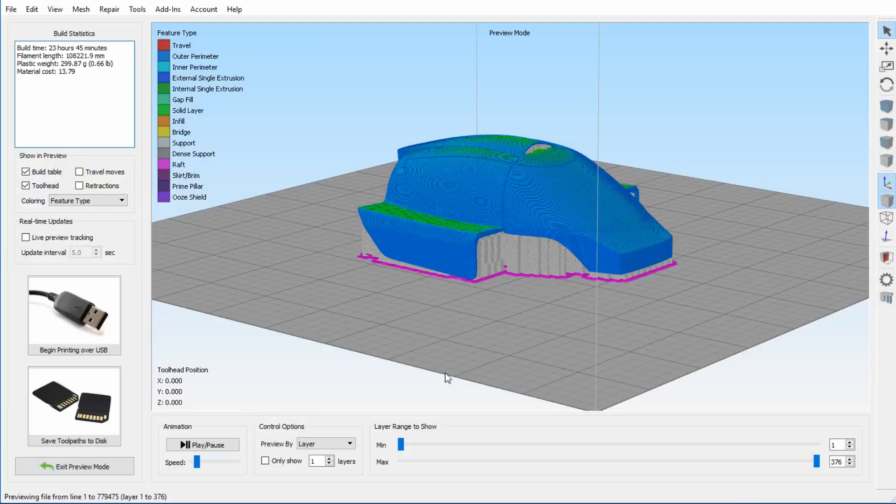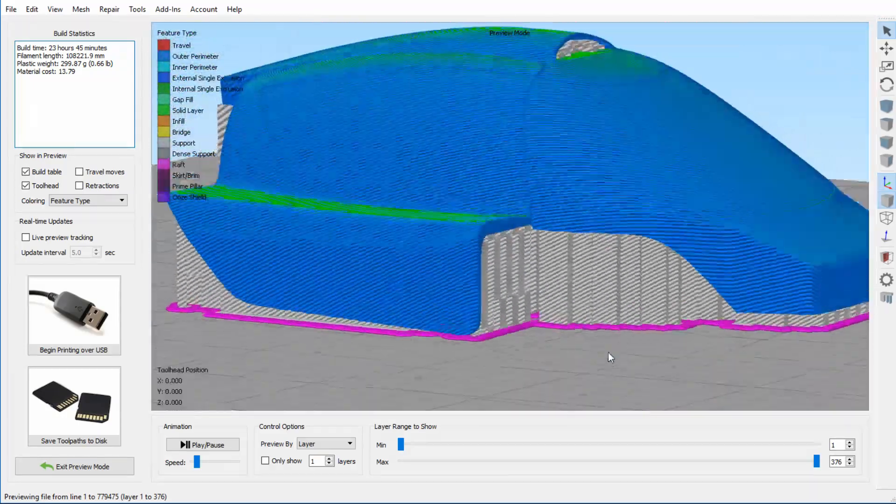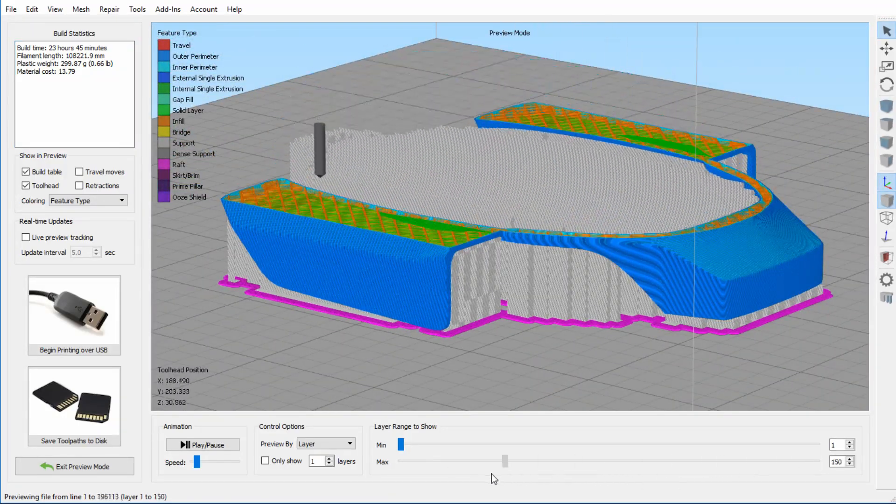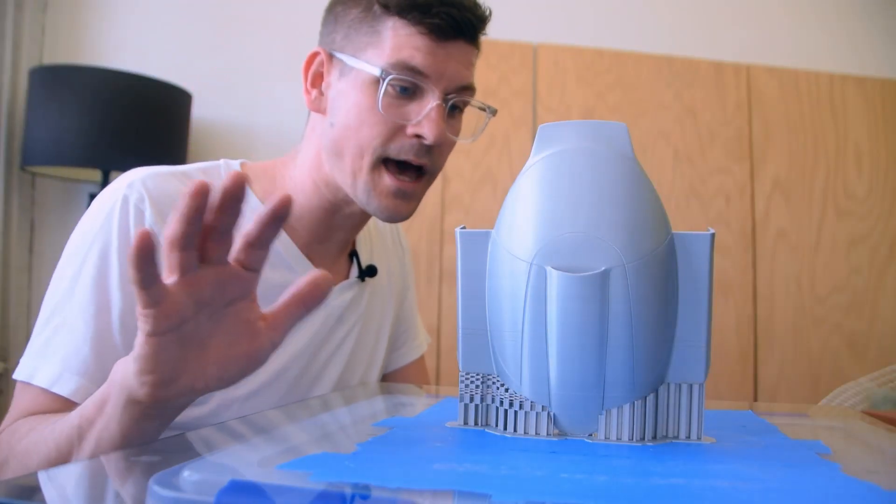Now printing horizontally, that means the entire interior cavity or a big portion of it would have to have support material in order to print this hollow cavity. So we did not want that.